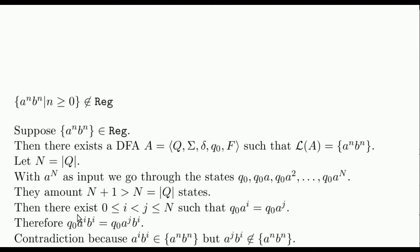Thus, the state reached after reading i As followed by i Bs is the same state as the one reached after reading j As followed by i Bs. This state must be an accepting state since A^i B^i is in the language. But it also must be rejecting since A^j B^i is not in the language.